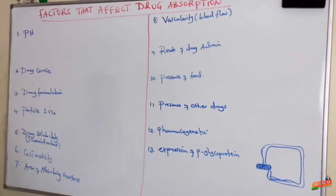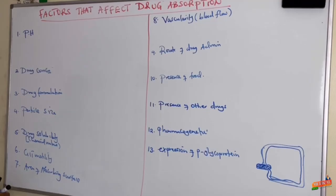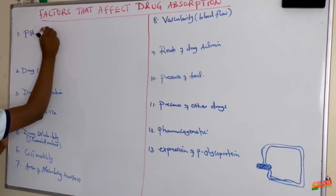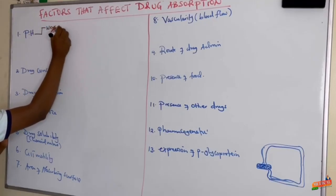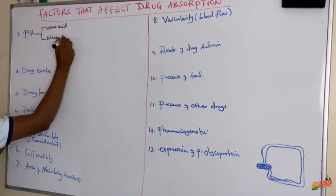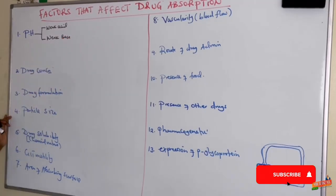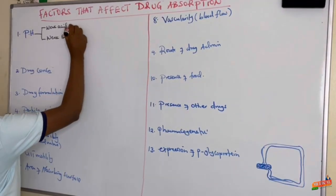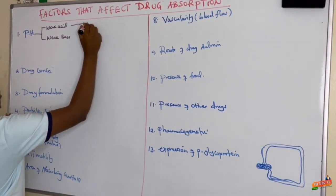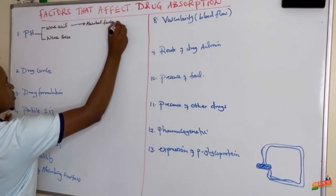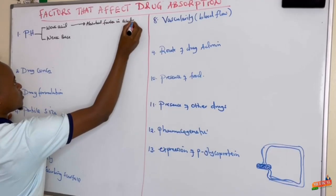I want to begin with pH, whereby the pH of the media affects drug absorption for either weak acids or weak bases. Drugs which are weakly acidic are absorbed faster in acidic medium.